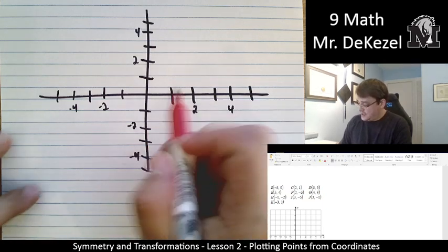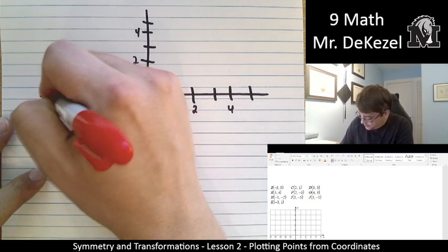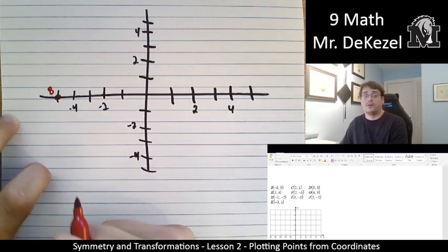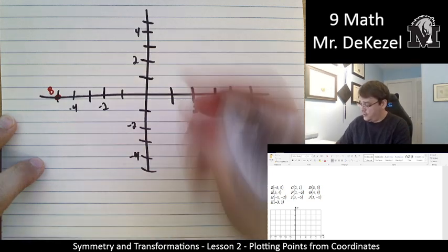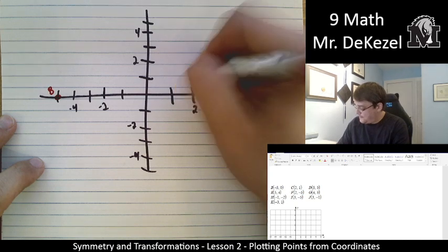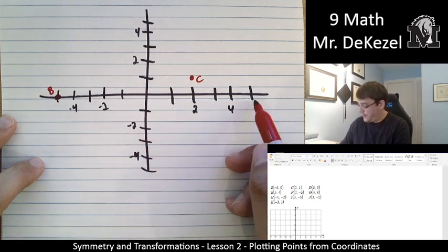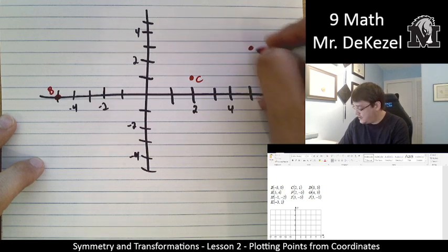B is minus 5 and then 0. So 5 to the left and then point 0. So that's right there on the axis. It goes 0 up and down. That's point B. Point C is 2, 1. So that's 2 to the right and 1 up. D is plus 5 and plus 3. So that's 5 to the right. 1, 2, 3, 4, 5 and 3 up to about there. So that is point D.